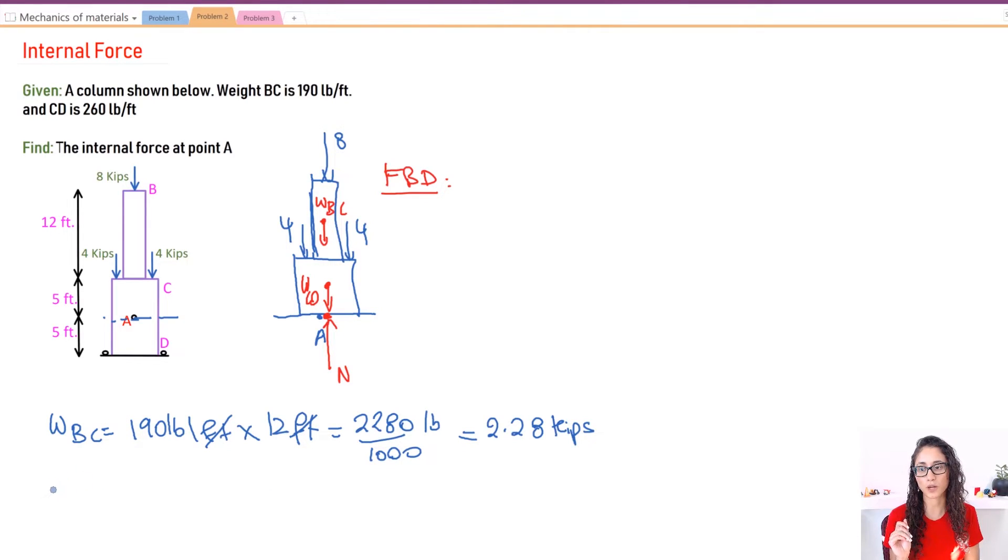Now let's do weight CD. So I have 260 pounds per foot. And we're going to actually multiply it not by the whole length, 10 feet, just by 5 feet, because we want to find the internal force at point A. So it's just this length, not the whole column. Now, if we were asked to find the internal force here at this point, then yes, we would multiply by this whole height.